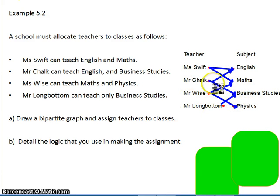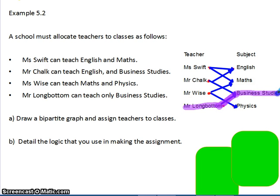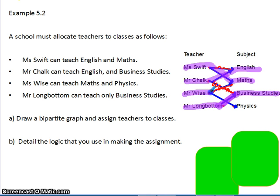Now we go through a logical approach to work out who can teach what. First, is there anyone or anything that can only be done by one person? Mr. Longbottom can only do Business Studies, so he has to be linked there. That means we can cross Mr. Chalk off Business Studies — it's a useless edge. That means Mr. Chalk has to do English. We can then cross out Ms. Swift from English, so she is going to have to do Maths, which means Mr. Wise must do Physics.